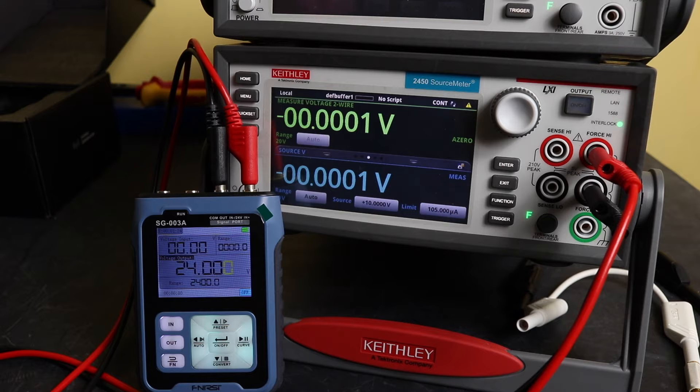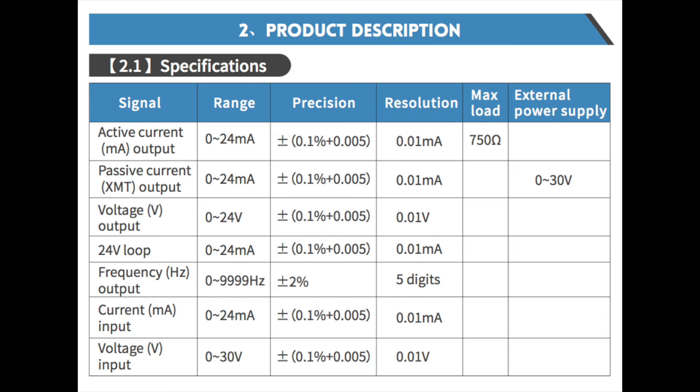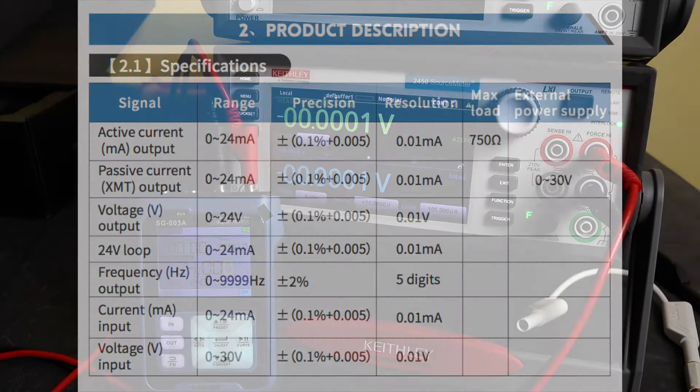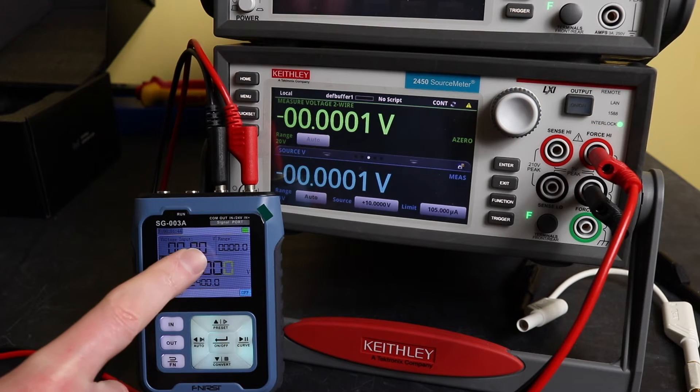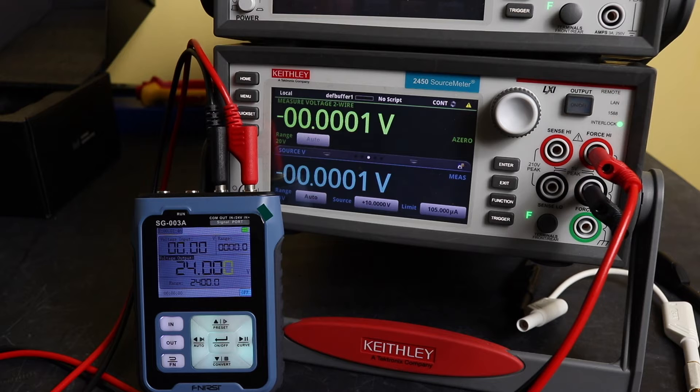I didn't compare it to their actual specifications, which I'll put this table up now. You can see that their specifications are predominantly 0.1% plus 0.005 digits. I do have a bit of an issue with that because on the voltage input you can't get down to what would be 5 millivolts. 10 millivolts is the resolution of the display.